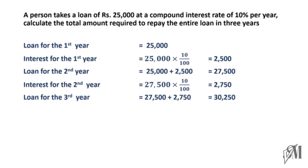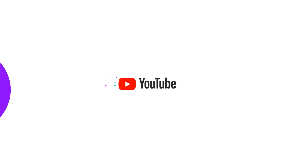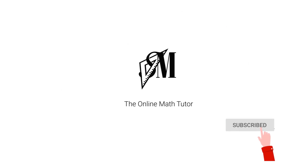Since the loan is paid back at the end of three years, we calculate interest for year 3 as well. Using the same method, interest for year 3 is 30,250 × 10/100 = 3,025 rupees. Adding this to the year 3 loan gives 30,250 plus 3,025 = 33,275 rupees as the total amount to be paid. I hope this has made calculating interest on reducing balance and compound interest clear. See you with another Smart Math tip — goodbye!